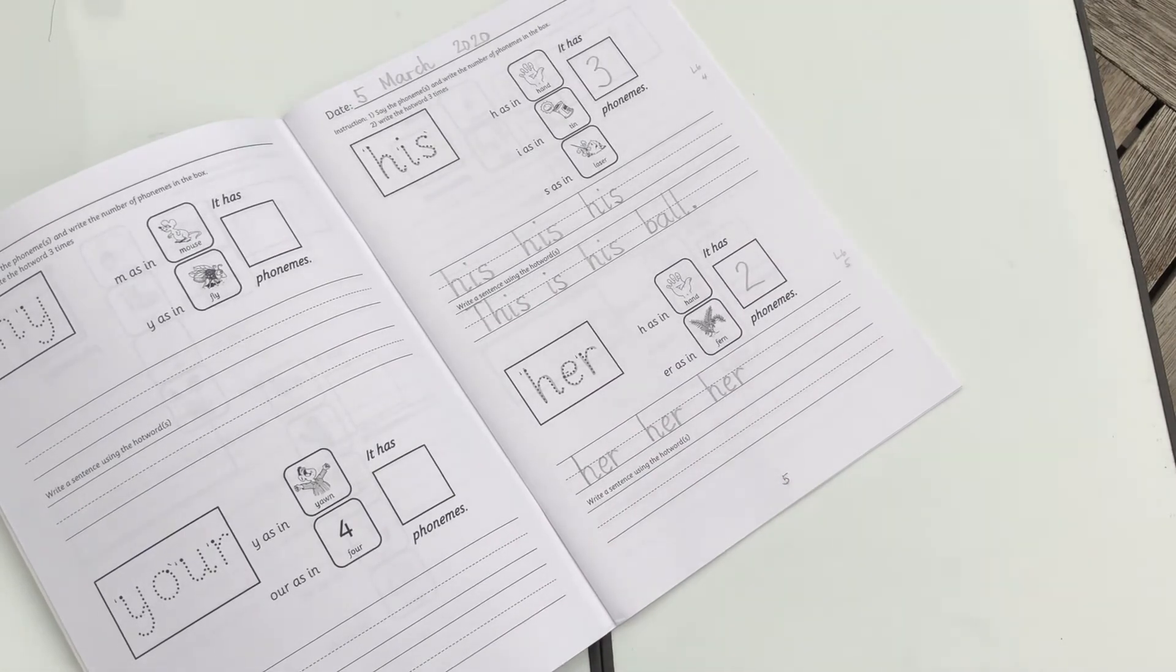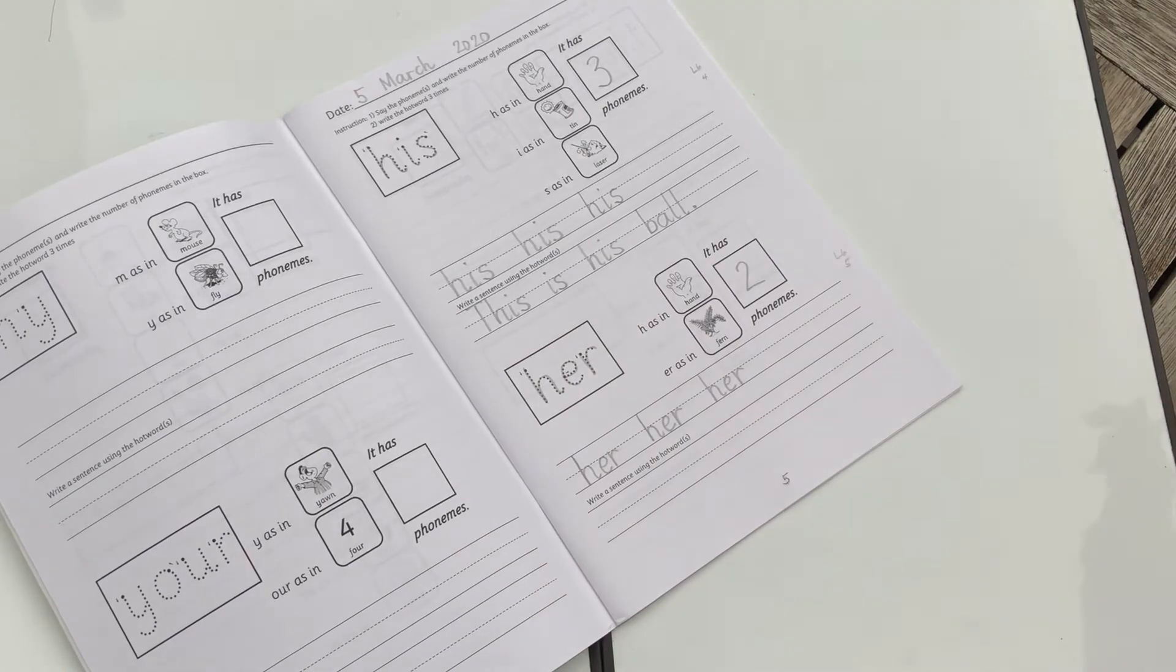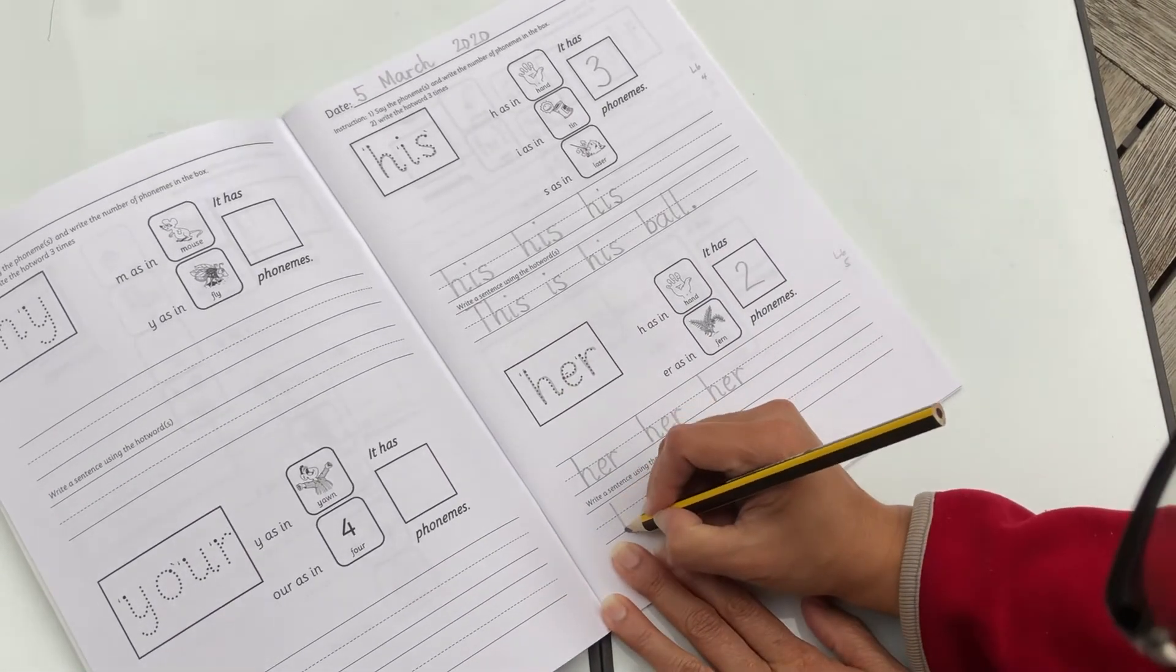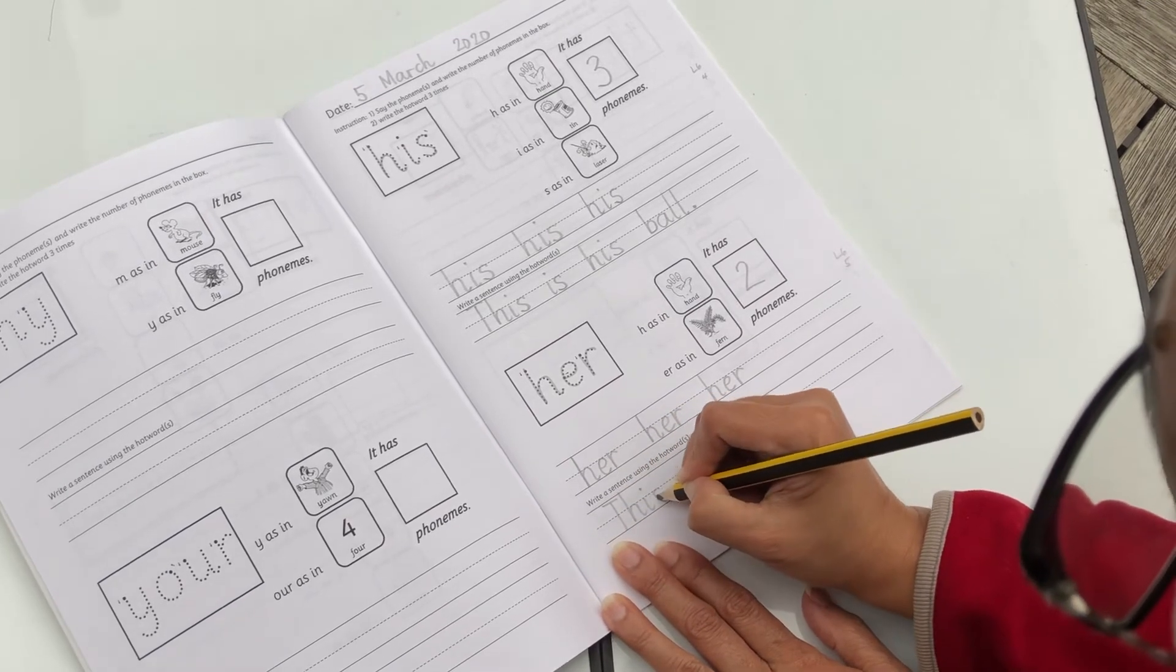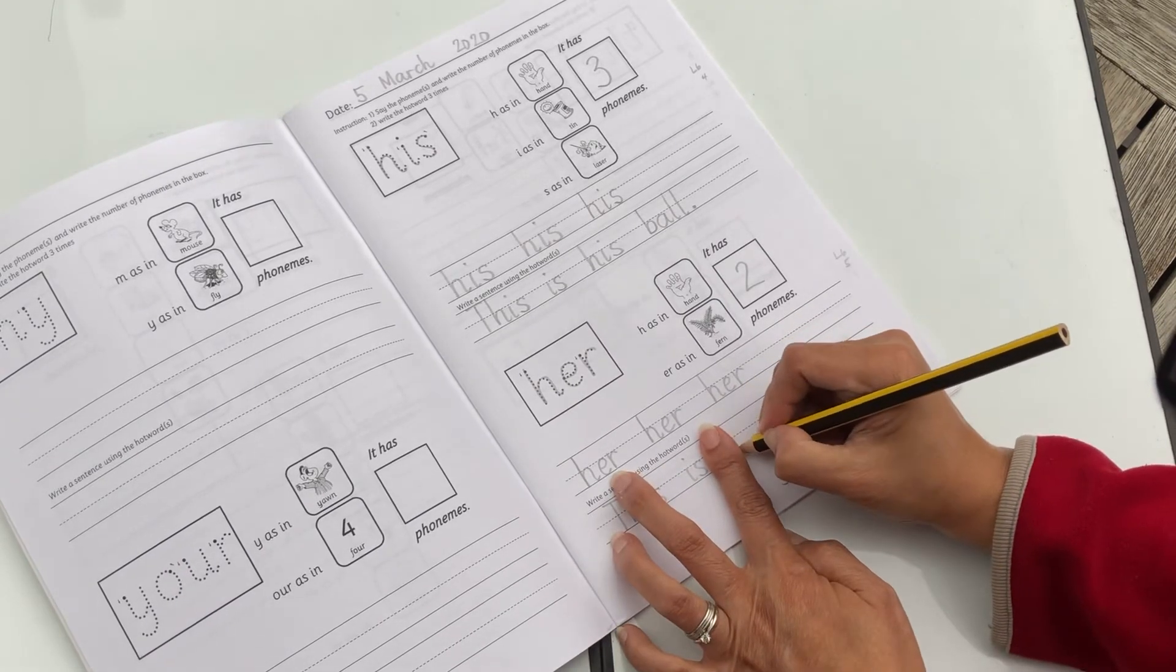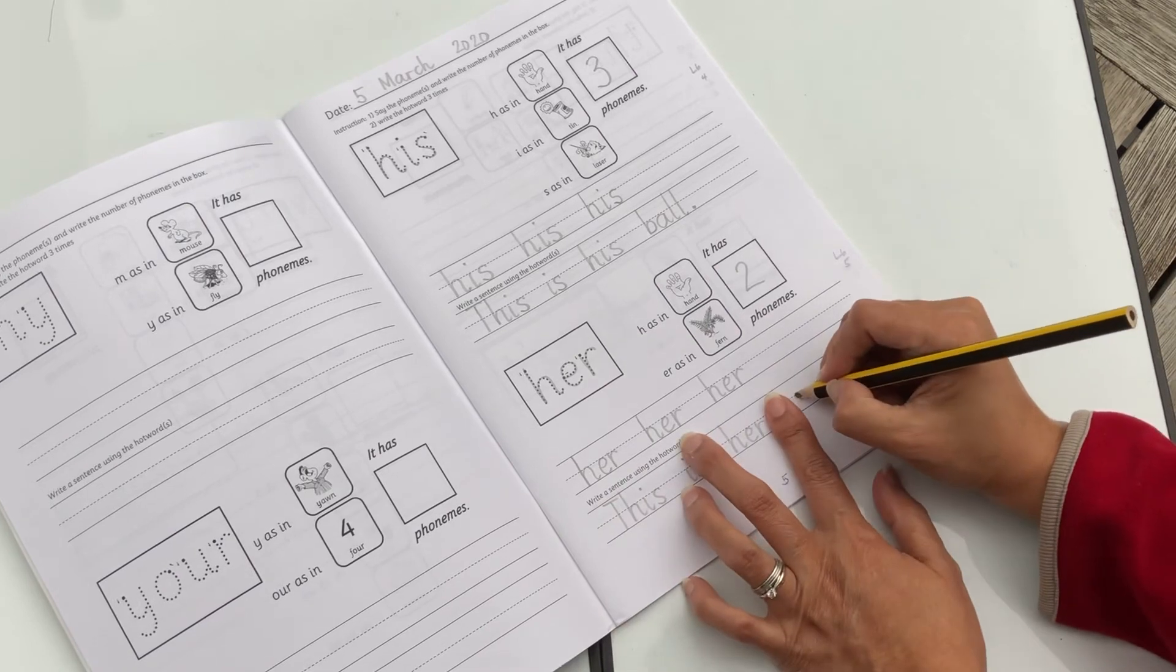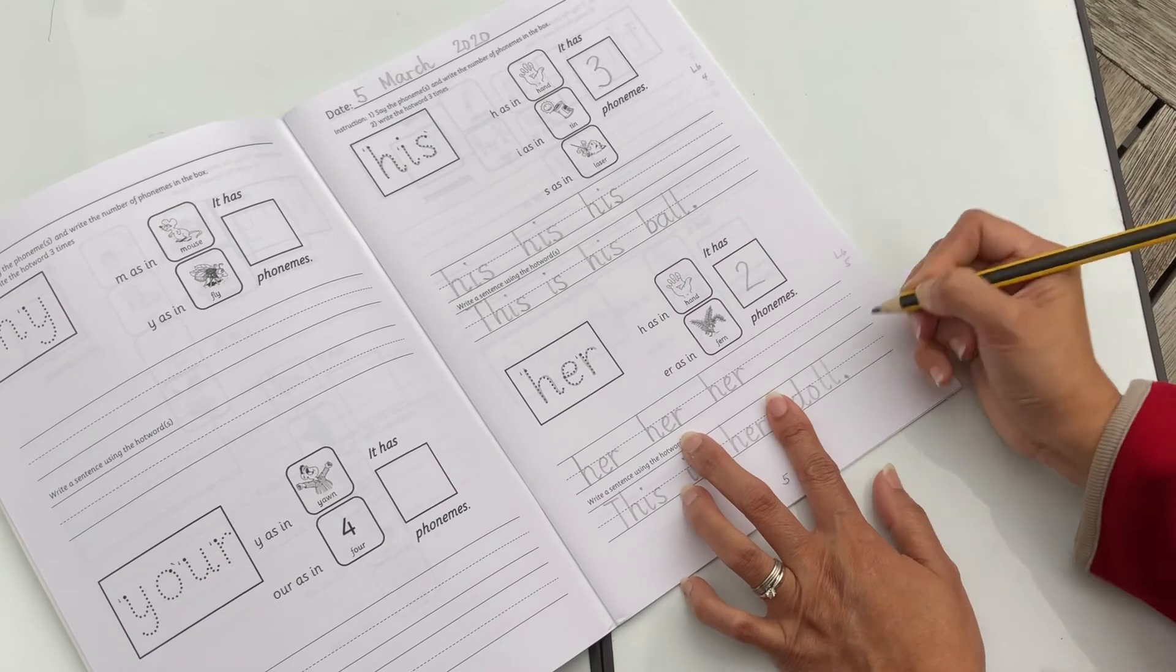Write a sentence. So earlier we said, this is his ball. What about, can you say, this is her doll? Or this is her bag. Or this is her jacket. This is, finger space, her doll. The doll. Yes.